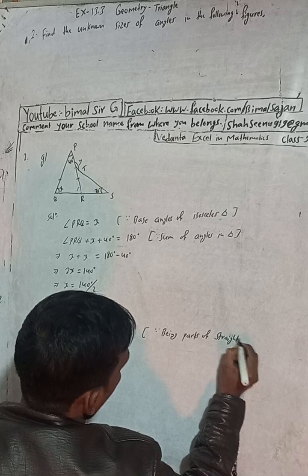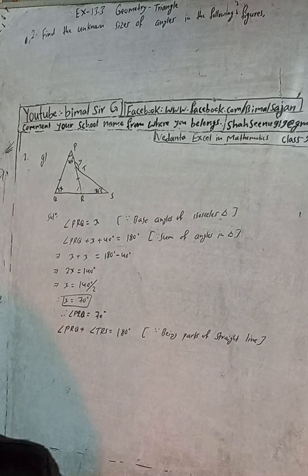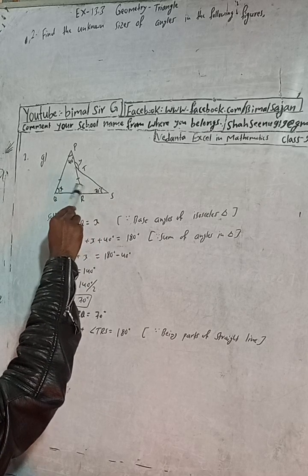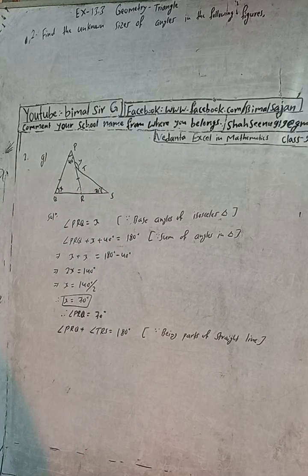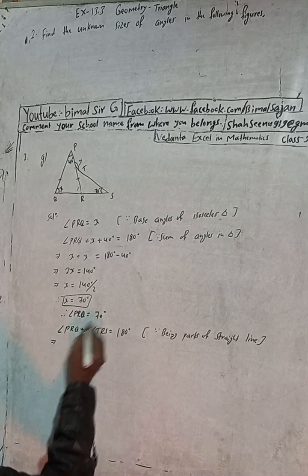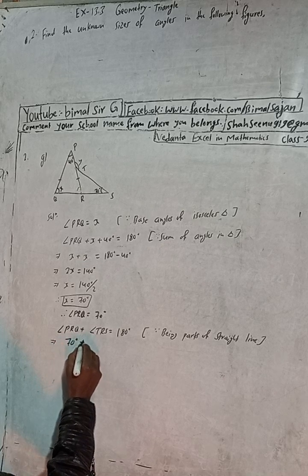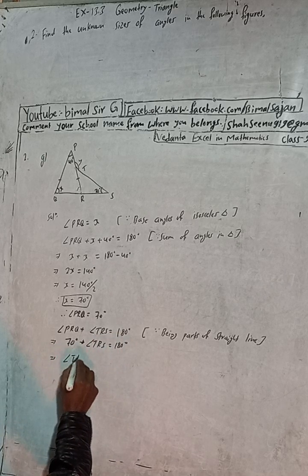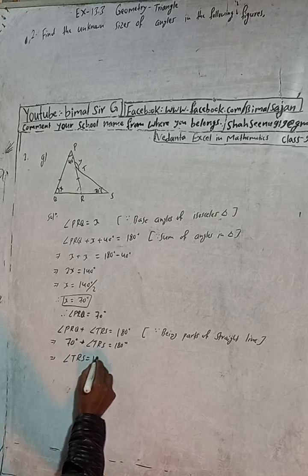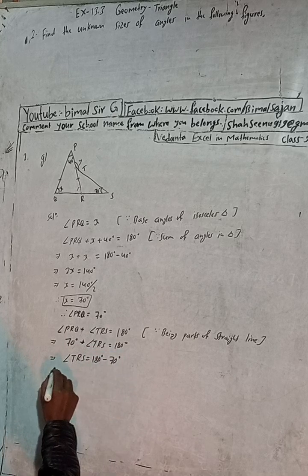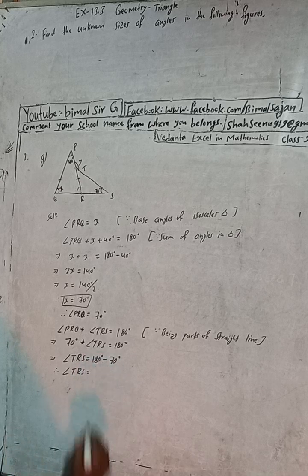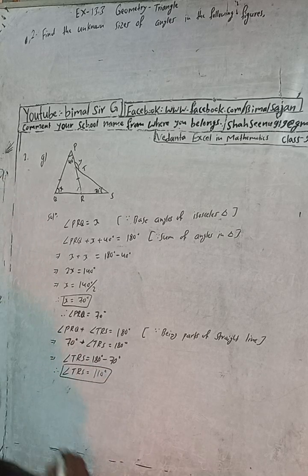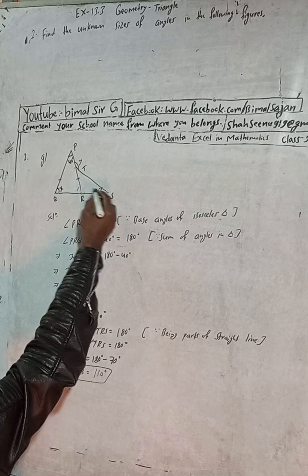This angle and this angle together form a straight line, so this plus this equals 180 degrees. We already know angle PRQ is 70 degrees, so 70 degrees plus angle TRS equals 180 degrees. Therefore angle TRS equals 180 minus 70, which is 110 degrees.